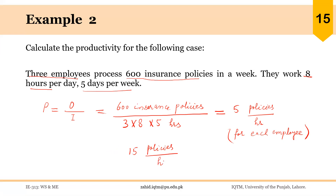So that will be the productivity of this department as a whole. But on average, each employee processes 5 policies per hour — that is the productivity per employee. So again, the input is the labor hour and the output here is the service provided, that is the processed policies.